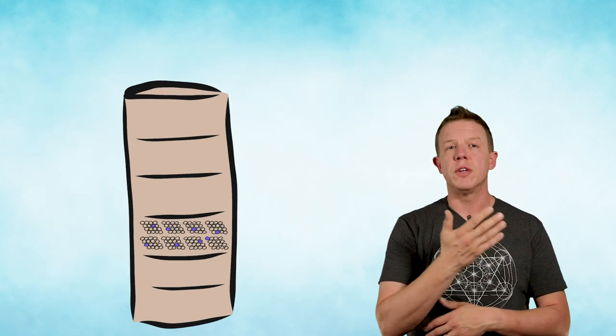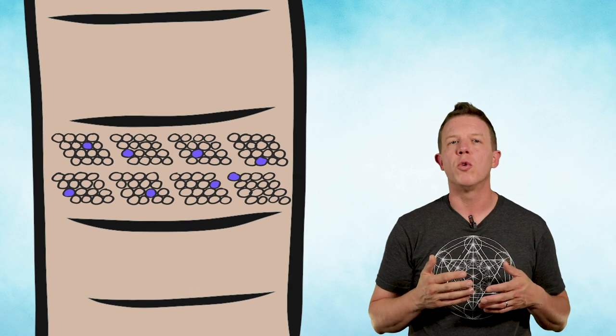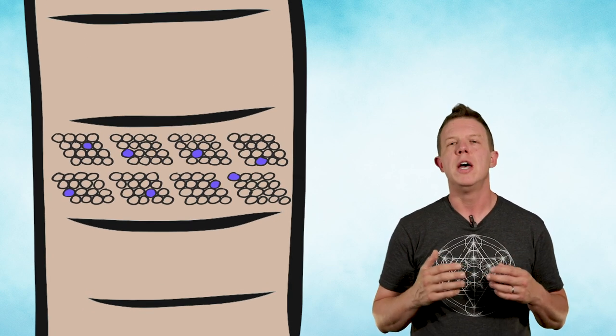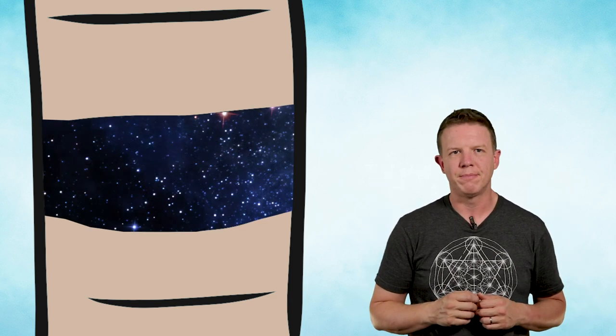We believe the number of grid cells that could exist within one layer of a cortical column is enough to represent a very large number of locations. I like to think of this as a universe of space inside your brain. So if you were to learn a new object, you might randomly choose a point within this non-physical universe to start off at and then move your sensors through the object space to learn it.